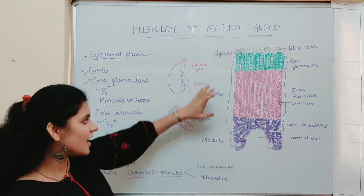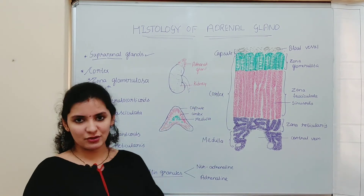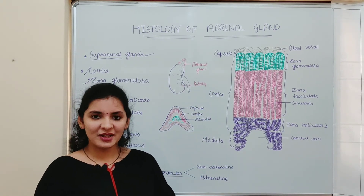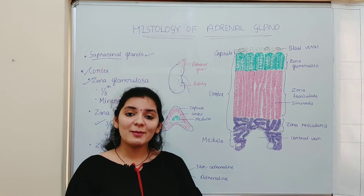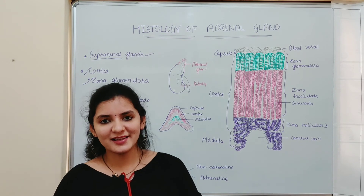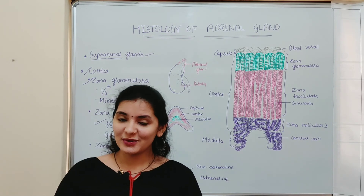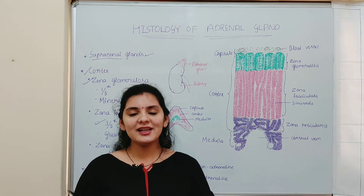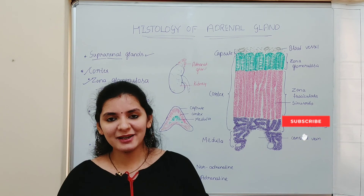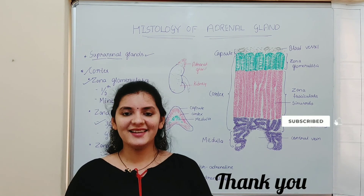So those are the two regions of the adrenal gland: the cortex and the medulla. That is all about the histology of the mammalian adrenal gland. I hope this video will be useful — if you like it, please hit the like button and subscribe to my channel. Thank you.